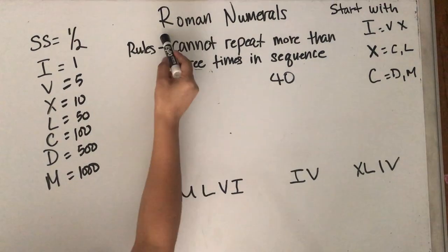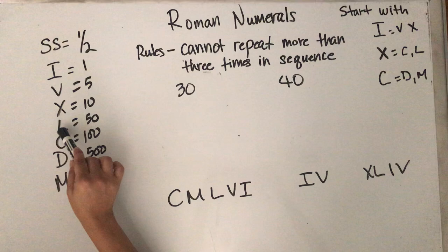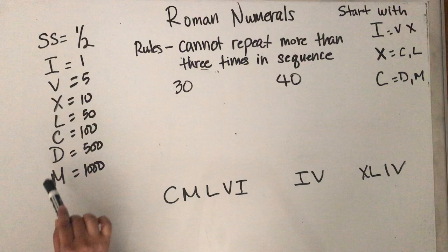Roman numerals. SS means half, I means 1, V means 5, X is 10, L is 50, C is 100, D is 500, and M is 1000.